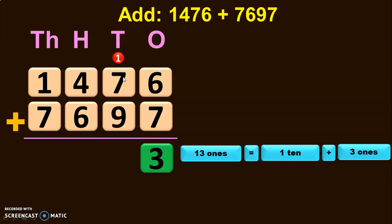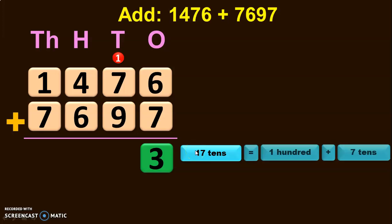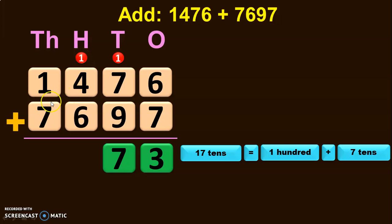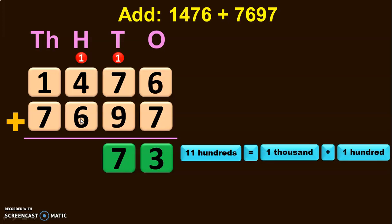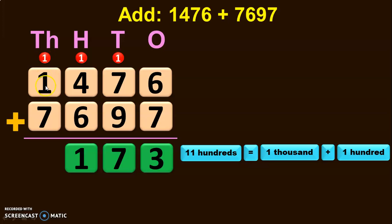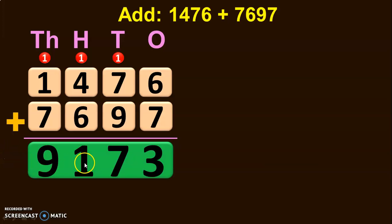Next, 1 plus 7 is 8, and 8 plus 9 will give you 17 tens. 17 tens can be regrouped as 1 hundred plus 7 tens. So the 7 tens is retained in the tens place and 1 hundred is taken as a carryover to the hundreds place. Next, add the digits in the hundreds place. 1 plus 4 will give you 5, and 5 plus 6 will give you 11 hundreds. 11 hundreds can be regrouped as 1,000 plus 1 hundred. Retain the 1 hundred in the hundreds place and take the 1 as a carryover to the thousands place. 1 plus 1 is 2, and 2 plus 7 is 9. So the sum of the two 4-digit numbers gives the answer 9,173.